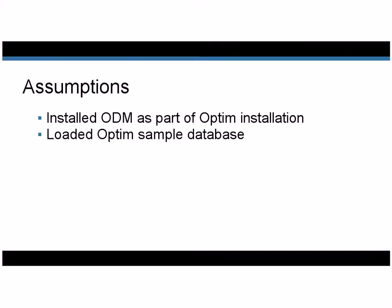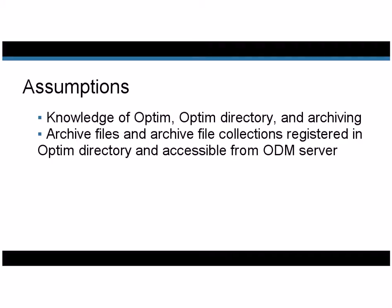This video assumes that you've installed ODM as part of your Optum installation and that you've loaded the Optum sample database tables. You should be familiar with the Optum solution, the Optum directory, and archiving concepts, such as archive files and archive file collections. The archive files and archive file collections that you want ODM to access must be registered in an Optum directory and accessible from the ODM server. Your archiving strategy will depend on your business needs and will determine when you create an archive file or an archive file collection.